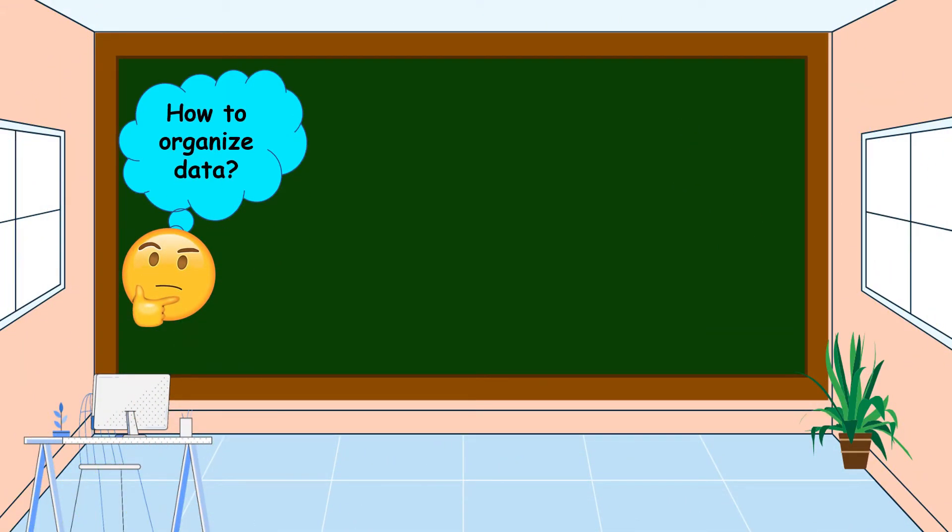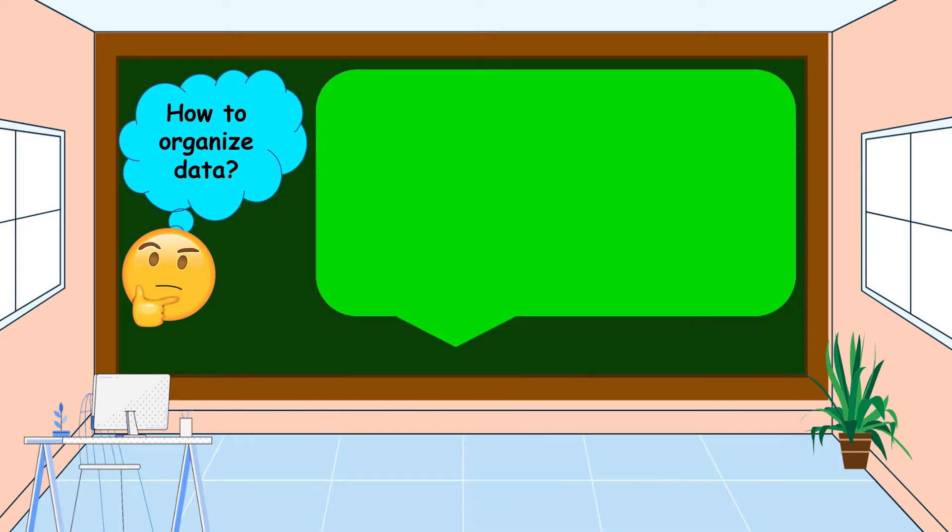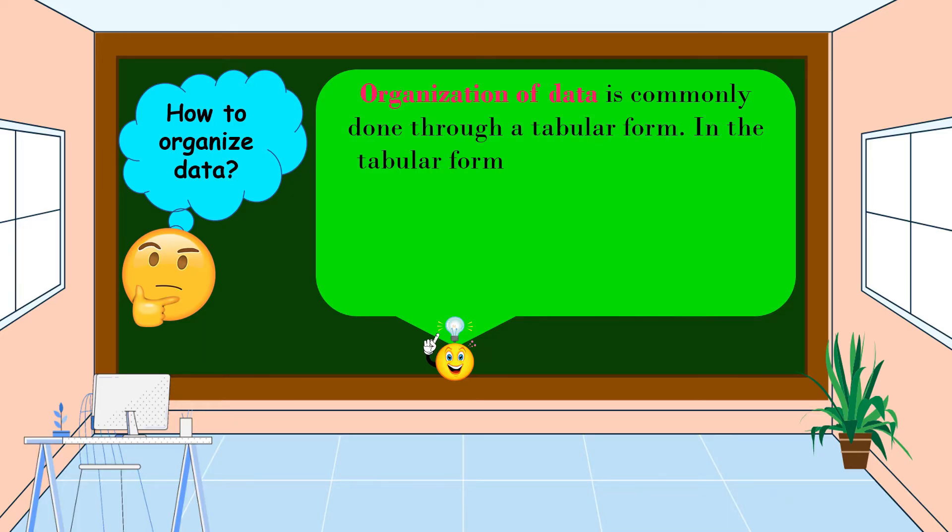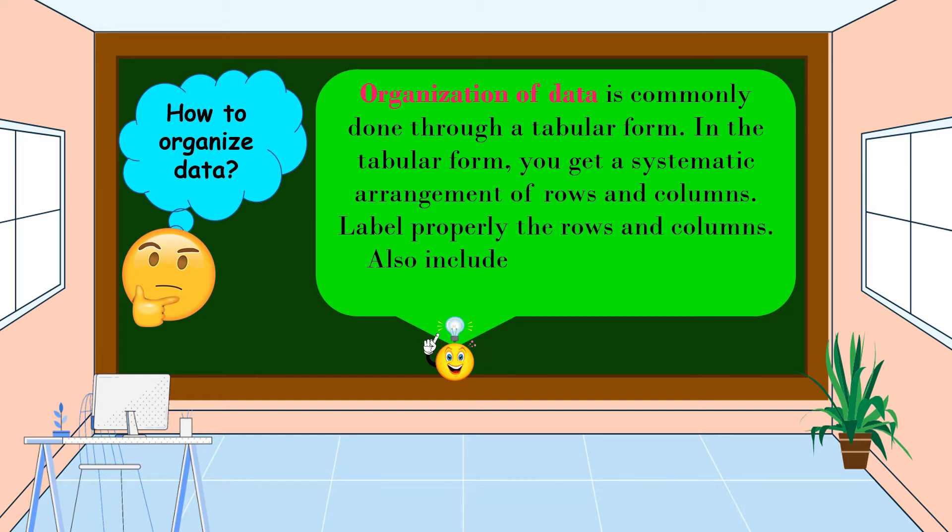How to organize data? Organization of data is commonly done through a tabular form or a table. In the tabular form, you get a systematic arrangement of rows and columns labeled properly. The rows and columns also include the title that briefly describes the data in the table.